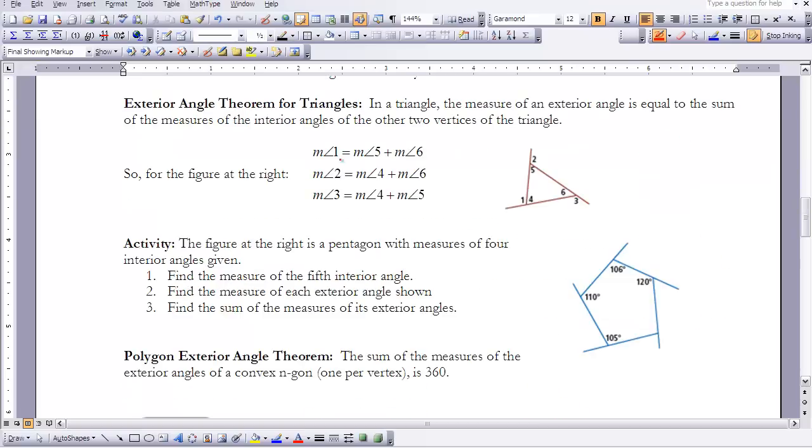That's where the exterior angle theorem for triangles comes from. In a triangle, the measure of an exterior angle is equal to the sum of the measures of the interior angles of the other two vertices of the triangle. So for the figure at the right, the measure of angle 1 is the same as 5 plus 6. The measure of angle 2 is angle 4 plus angle 6. And the measure of angle 3 is the sum of 4 plus 5.